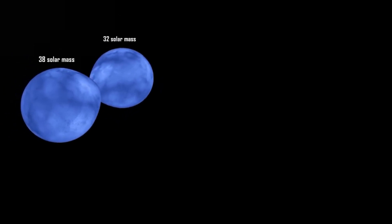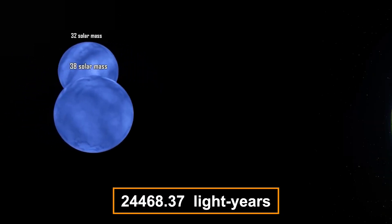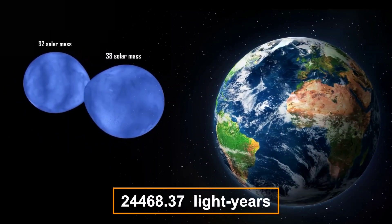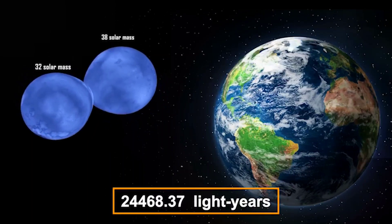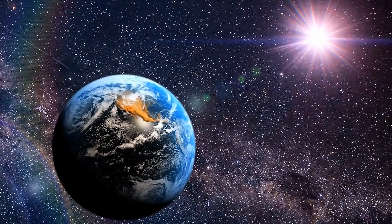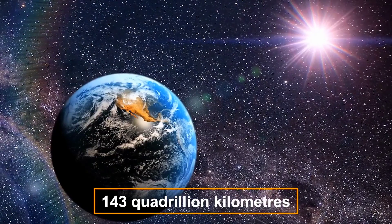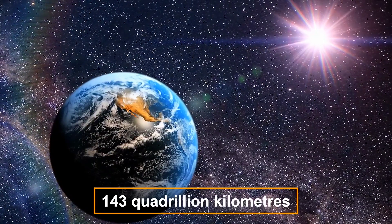The colour of My Camelopardalis is blue-white, as determined by the star's spectral type. My Camelopardalis is 24,468.37 light-years away from Earth. The distance between it and the Earth is 143 quadrillion kilometres.